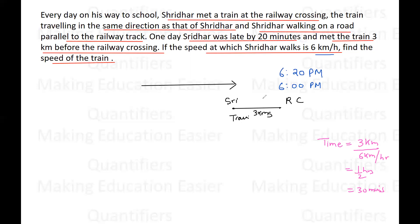Now, we know that Sridhar is going to take 30 minutes and he will reach the railway crossing at 6:20 p.m. So we can find the particular time when Sridhar is going to meet the train. That means Sridhar will meet the train exactly at 5:50 p.m., because from 5:50 p.m. if we add 30 minutes, that will be equal to 6:20 p.m.